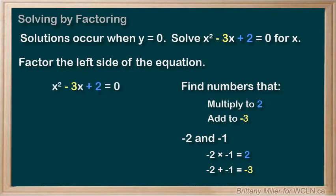So x squared minus 3x plus 2 factors into x minus 2 times x minus 1. That means that we need to find values of x that will make x minus 2 times x minus 1 equals 0 true.